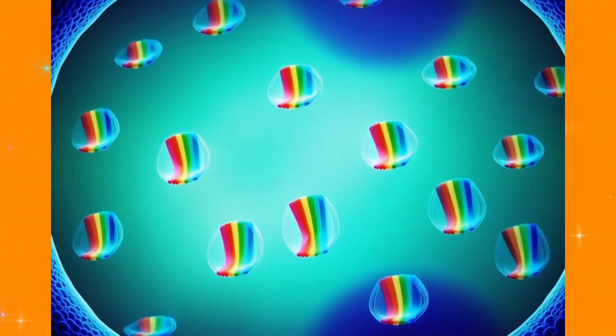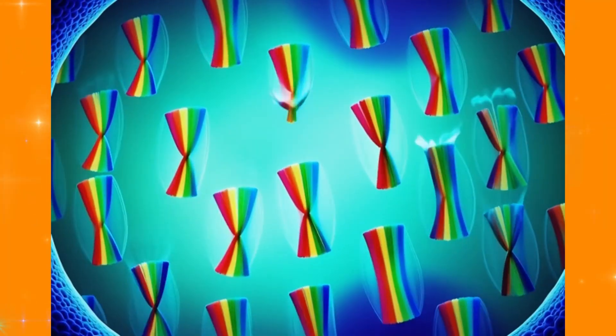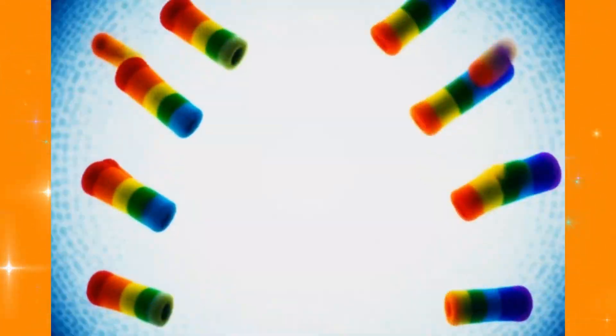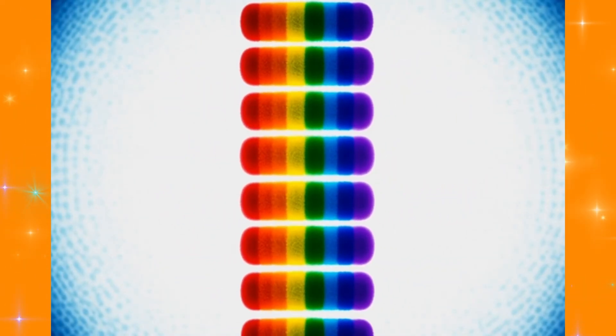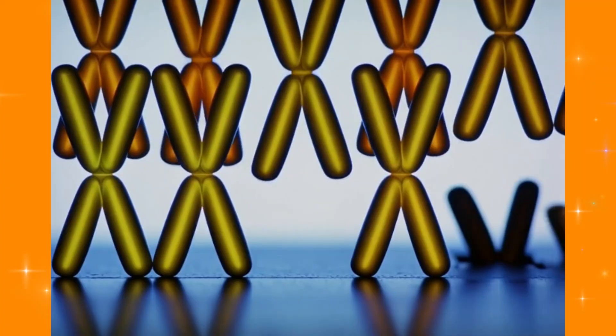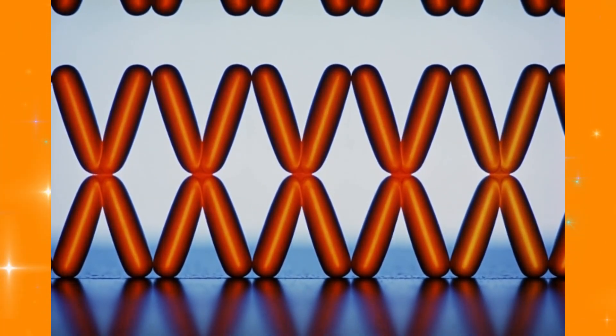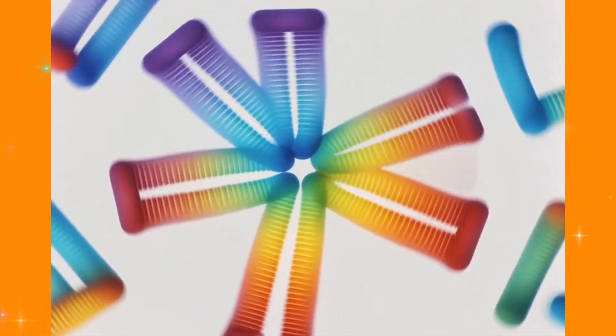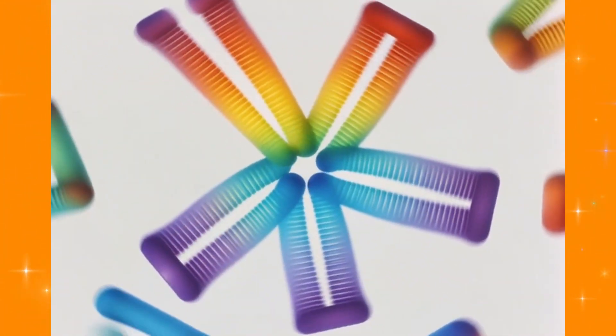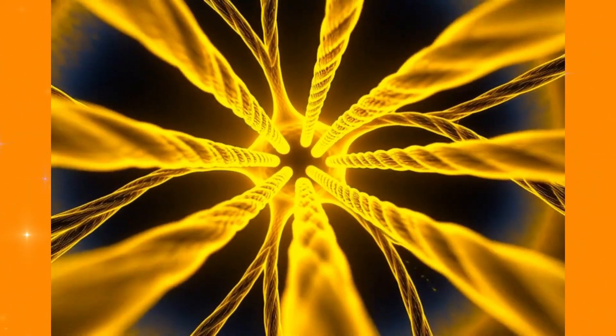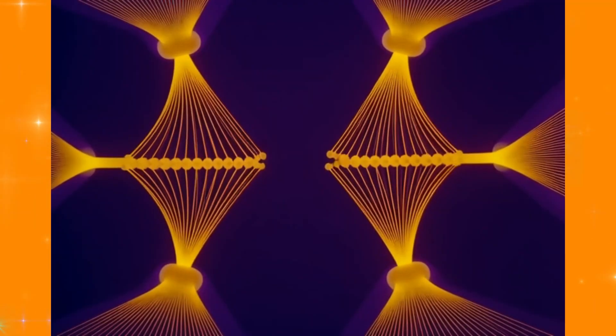Now the cell builds something that looks straight out of science fiction. Tiny protein cables shoot out from opposite ends of the cell, grabbing onto each chromosome like molecular grappling hooks. These cables are so small that millions would fit across the width of a human hair, yet they're strong enough to pull entire chromosomes apart. Here's where it gets dramatic.